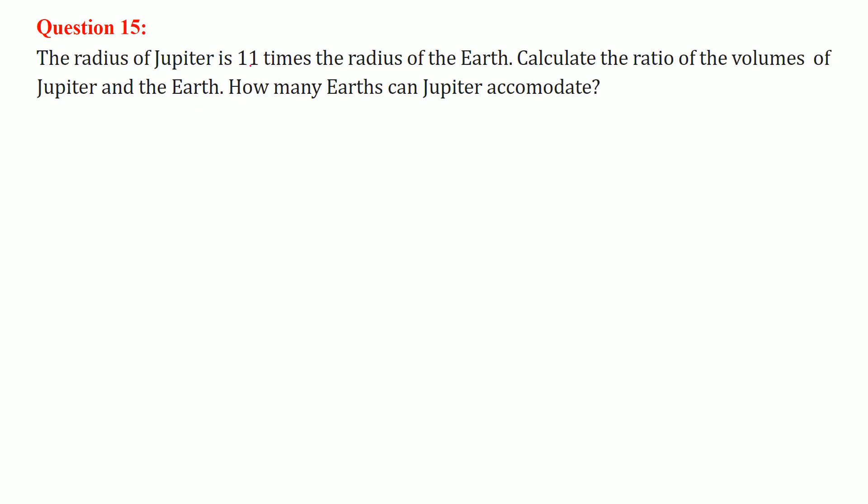The radius of Jupiter is 11 times the radius of the Earth. Calculate the ratio of the volume of Jupiter and Earth. The volume is 4/3 π r^3. It is given that the radius of Jupiter is 11 times the radius of Earth. If the radius of Earth is r, we can take Jupiter as 11r. For Earth we can use r, and for Jupiter we can take 11r.